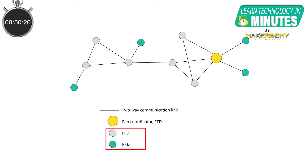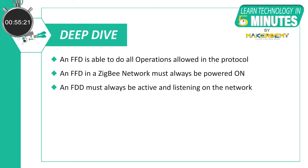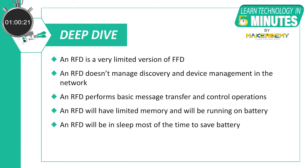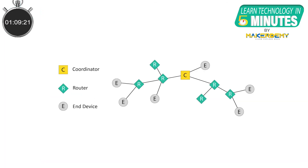A node can operate as a full function device (FFD) or as a reduced function device (RFD). An FFD can perform all the tasks defined in the Zigbee standard, while an RFD, being optimized for consuming less power, operates within a limited set of IEEE 802.15.4 MAC layer functions. Based on these two categories, a node in a Zigbee network can play three roles.